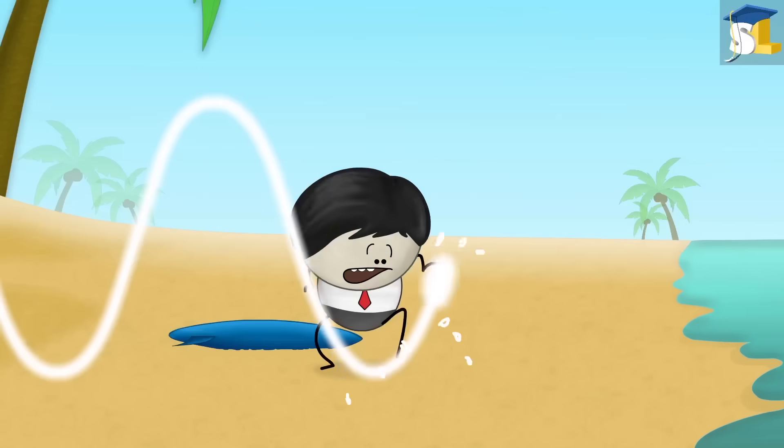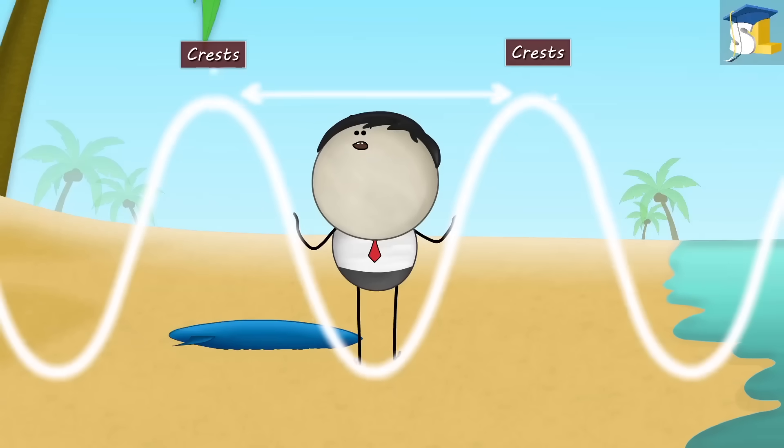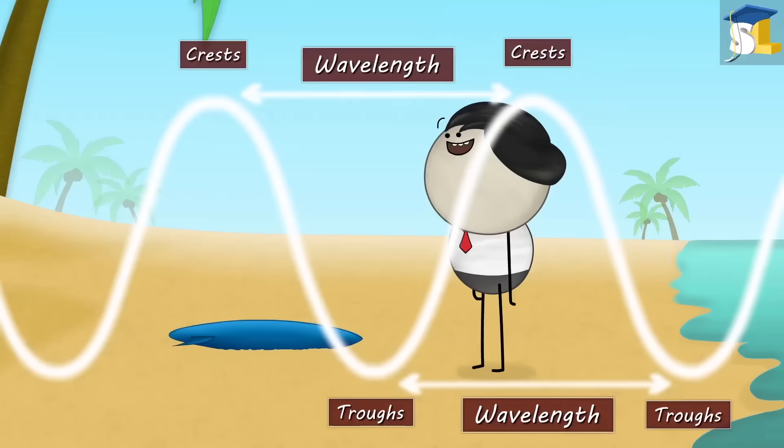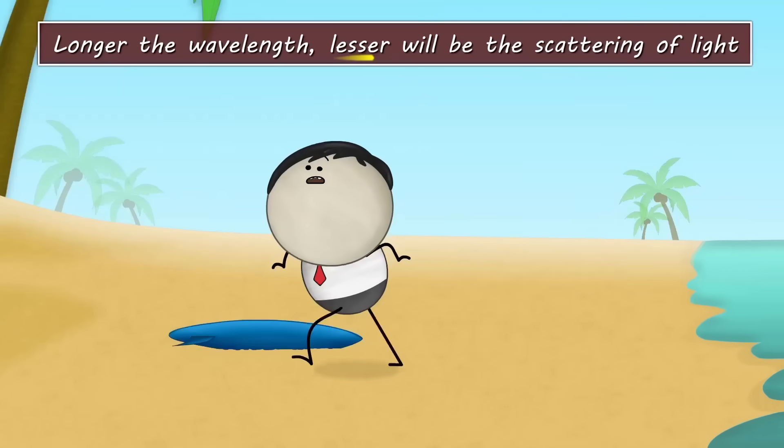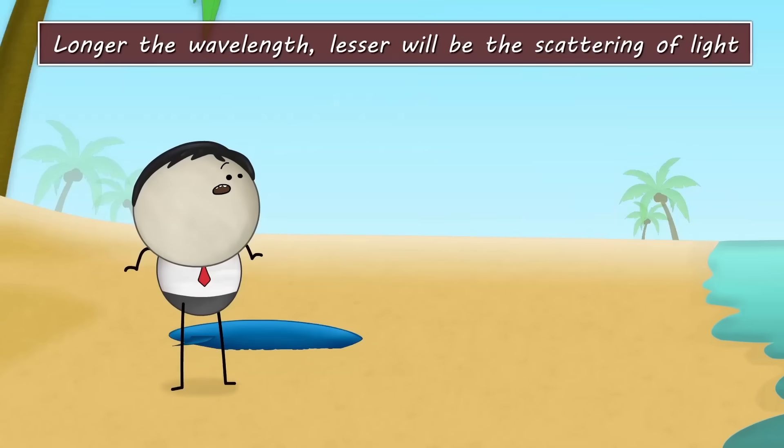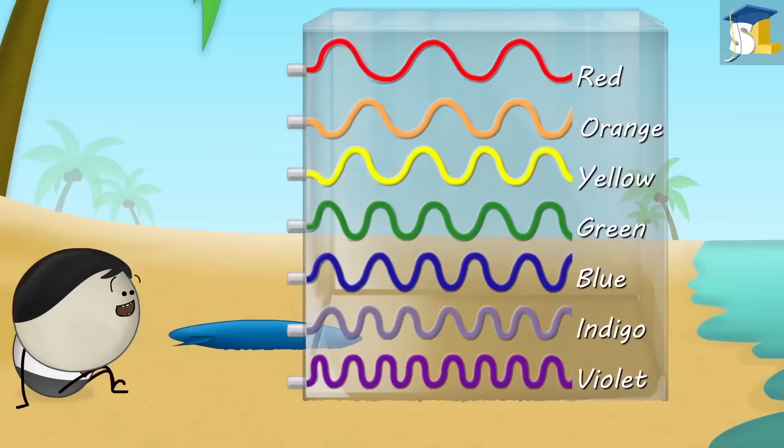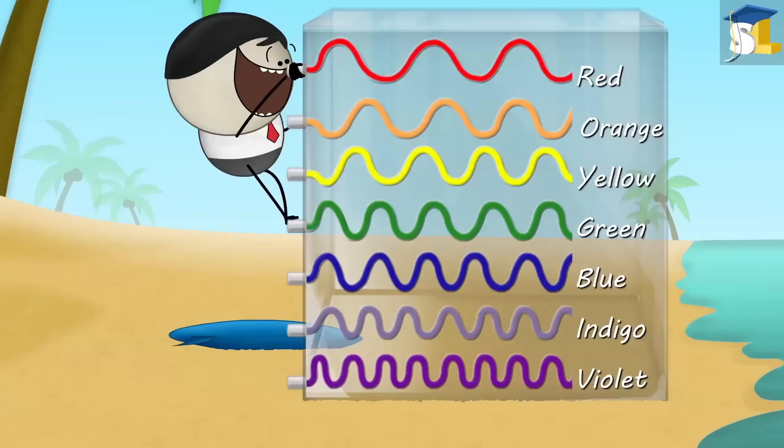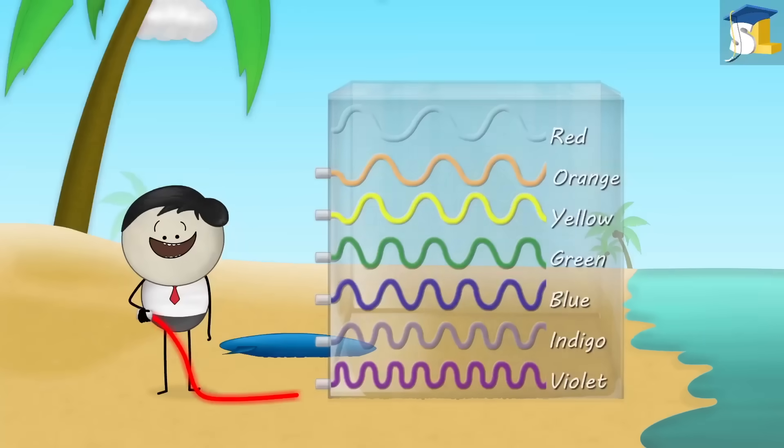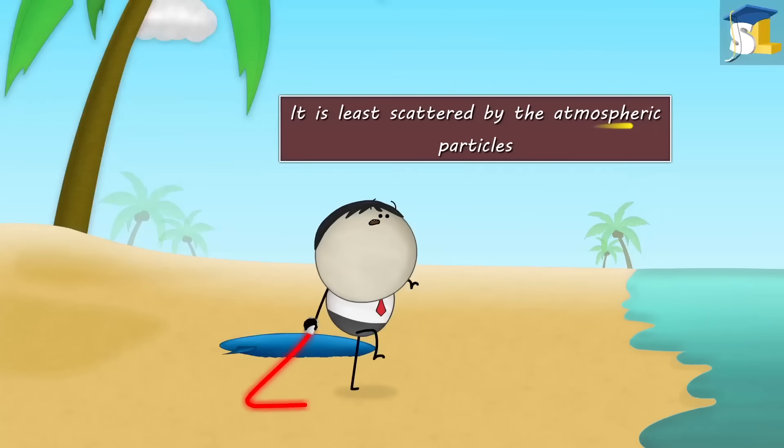No. In the wave theory of light, the distance between successive crests or troughs is called wavelength. Longer the wavelength, lesser will be the scattering of light. Now, among the colors of visible light, red has the longest wavelength. Hence, it is least scattered by the atmospheric particles.